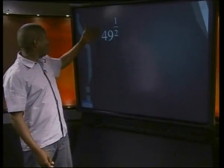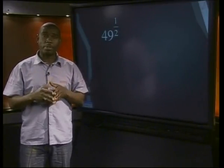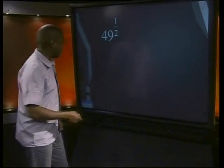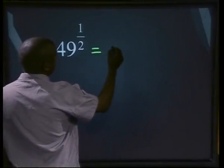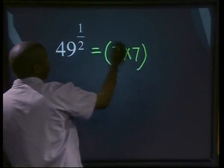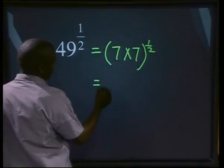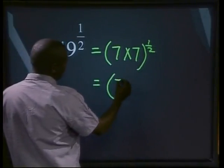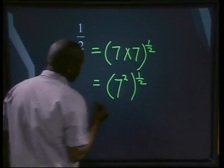Look at 49 to the power 1 over 2. We know from the previous lesson that every number can be written as a product of prime numbers. Can you write 49 as a product of prime numbers? Let's factorize it. 49 can be written as 7 times 7, all to the power of 1 over 2, which will be the same as 7 to the power 2, all to the power of 1 over 2.